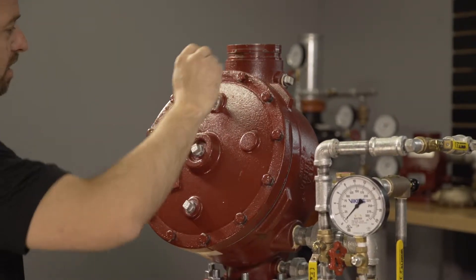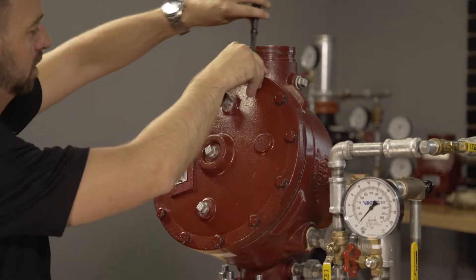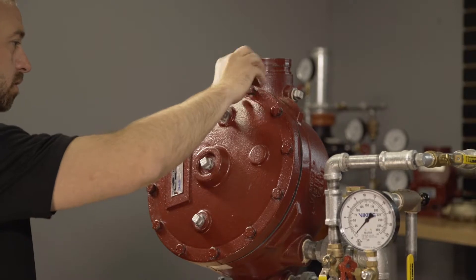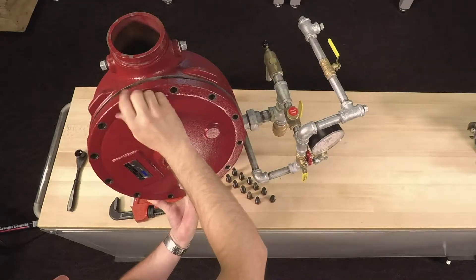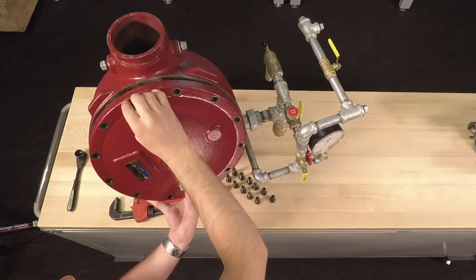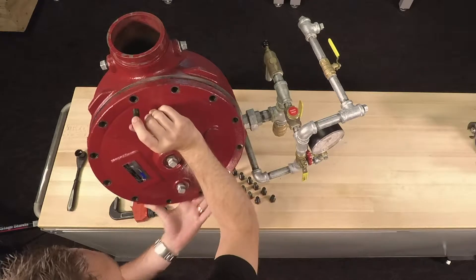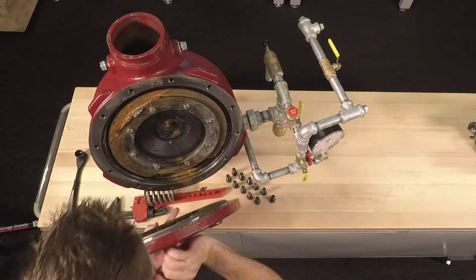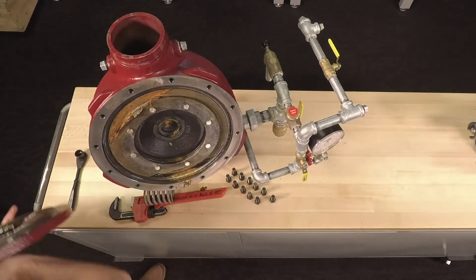With the cover now disconnected from the trim, we can remove the cover screws from the cover of the valve. With the cover screws removed, we can now remove the cover from the valve using caution as it is under spring tension. The spring will also be removed with the cover.